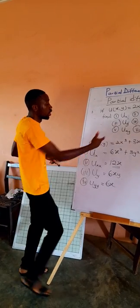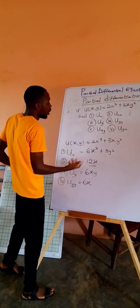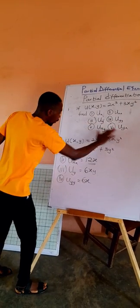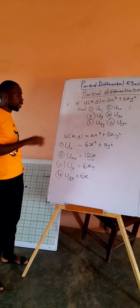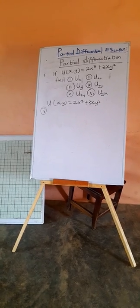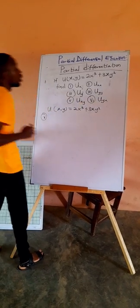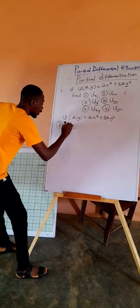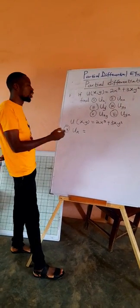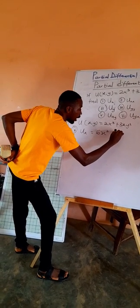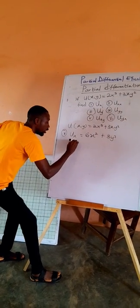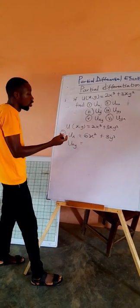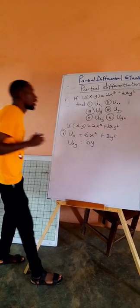Now we go to the rest, but our board is full, so let me clean this part. Then we do the partial differentiation with respect to x then with respect to y, and the partial differentiation with respect to y then with respect to x. These two are very important — they will help us develop a theory. So the fifth one: ∂²U/∂x∂y — first we differentiate with respect to x, remembering y is considered as constant. This gives 6x squared plus 3y squared. Then we differentiate this with respect to y: the first term is constant since there is no y, and differentiating 3y squared gives 6y.